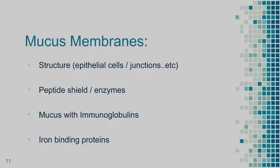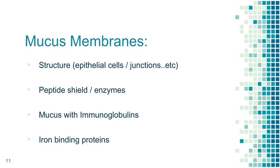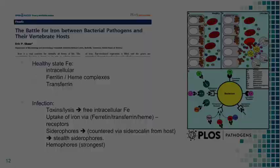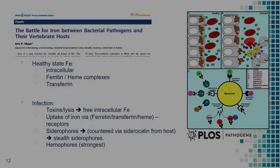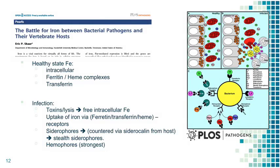Going down to mucous membranes — same principle: structured junctions, desmosomes, and hemidesmosomes that prevent penetration of bacteria or pathogens into subcutaneous or subepithelial tissue. Same thing with peptides, enzymes, and mucus. The adaptive immune system also intertwines here with secretory immunoglobulins — mainly IgA, some IgG. I want to focus on iron-binding proteins because this appears to be a very old defense mechanism — iron is very important to all bacteria and all living things.